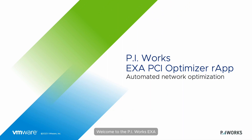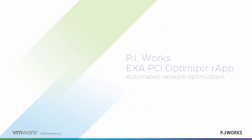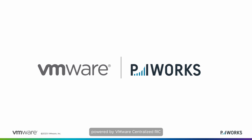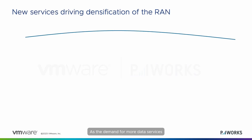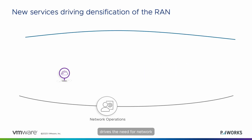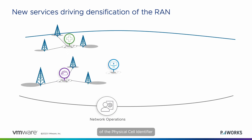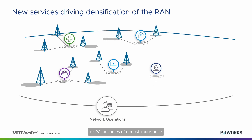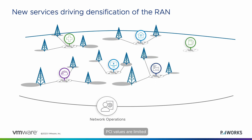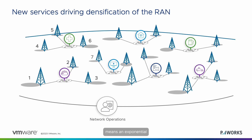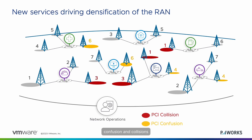Welcome to the PI Works ExaPCI Optimizer R-App Demonstration, powered by VMware Centralized RIC. As the demand for more data services drives the need for network densification and more cells, proper management of the physical cell identifier, or PCI, becomes of utmost importance. PCI values are limited and have to be reused. Hence, high densification means an exponential increase in potential PCI confusion and collisions.